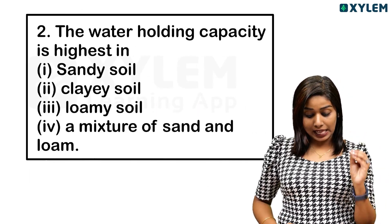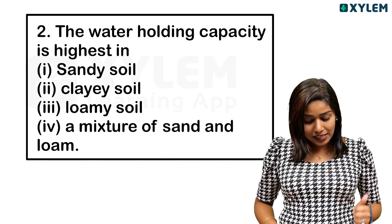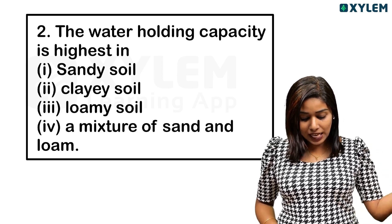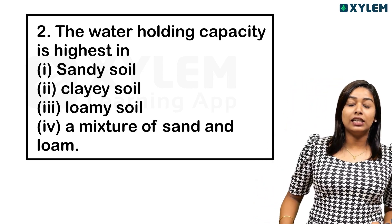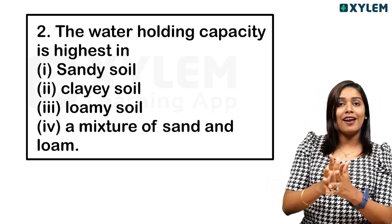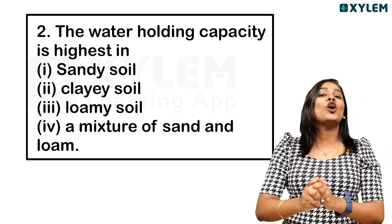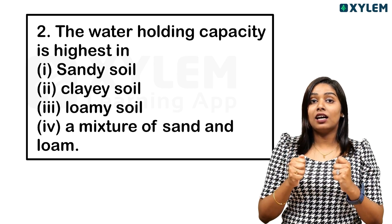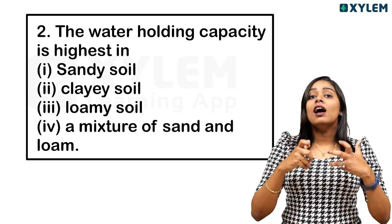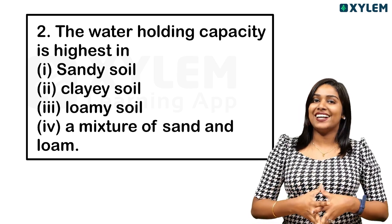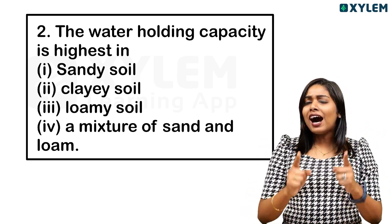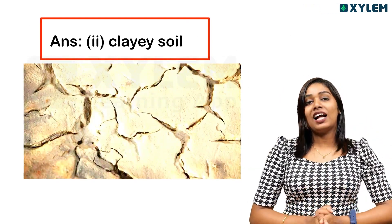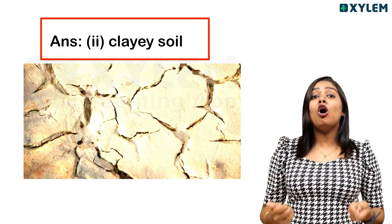The water holding capacity is highest in: Option A, Sandy Soil; Option B, Clay Soil; Option C, Loamy Soil; Option D, a mixture of sand and loam. Water holding capacity — the answer is clay soil, as it holds the most water and not all water drains away.